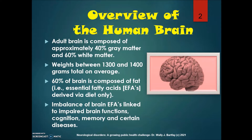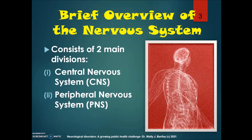Let's begin with an overview of the human brain. The adult brain is composed of approximately forty percent gray matter and sixty percent white matter. It weighs between thirteen hundred and fourteen hundred grams. Sixty percent of the brain is composed of fat — these are essential fatty acids, or EFAs for short, derived primarily via the diet. An imbalance of brain EFAs may be linked to certain brain dysfunctions, problems with cognition and memory, and certain diseases.